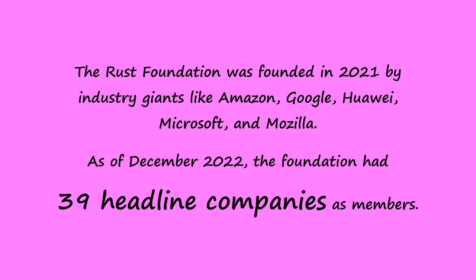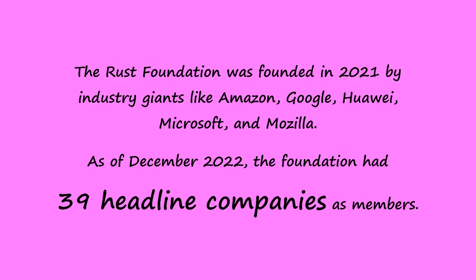Rust didn't just emerge out of nowhere. It was designed to solve real problems that developers face every day. Created by Graydon Hoare in 2006 and officially launched in 2015, Rust started as a personal project but quickly became a language that developers couldn't ignore. Backed by Mozilla, its mission was clear: combine the performance of C++ with a focus on memory safety and a better developer experience.